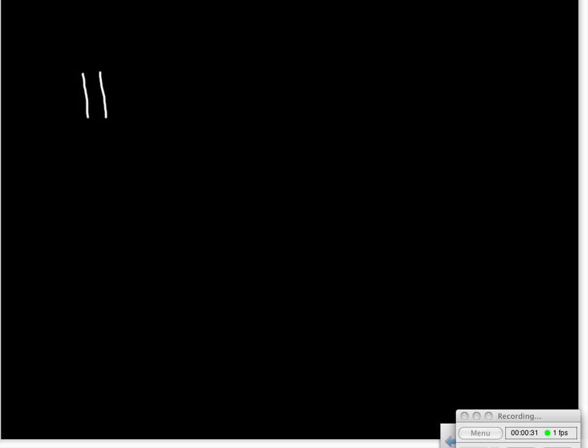The first equation we're going to work on balancing is one for the decomposition of water. In my classroom we have something called a Hoffman apparatus, and we run some electrical current through water. What happens is we break down the water into its component elements of hydrogen and oxygen.